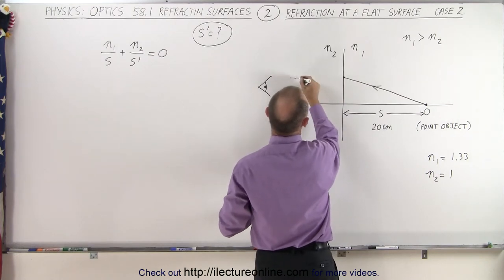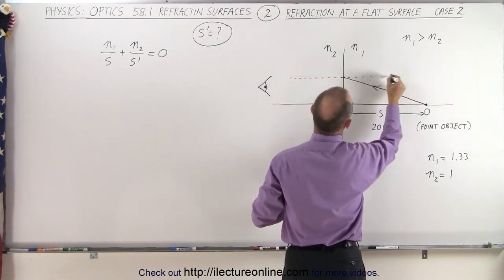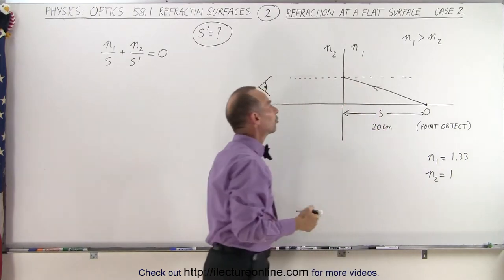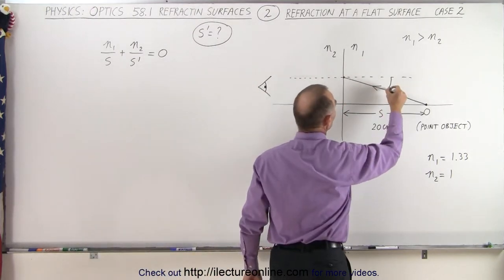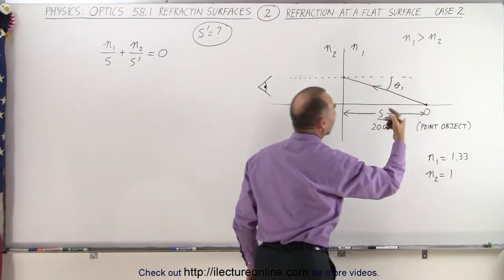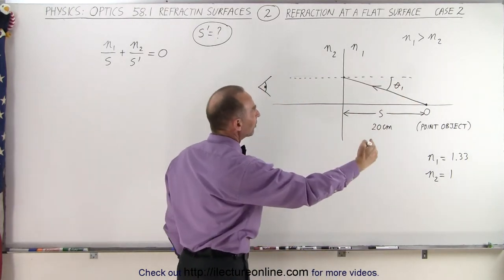And notice we're now going to draw a line. Well, let's try this again. A line to that point, which is perpendicular to the surface, to the boundary. And you can see then that this here, this angle, is called theta sub 1, and that's the inbound angle from the object.